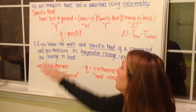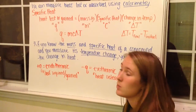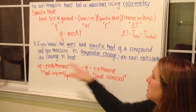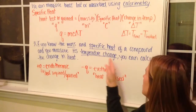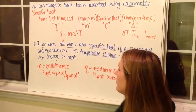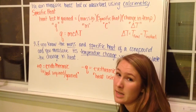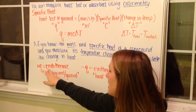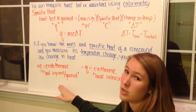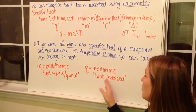This condenses down to Q equals MC delta T. In words, if you know the mass and the specific heat of a compound and you measure its temperature change, you can calculate the change in heat. Change in heat is Q. If we have a positive Q, it's endothermic — heat was required or gained for the reaction to happen. A negative Q is an exothermic reaction, meaning heat was released.